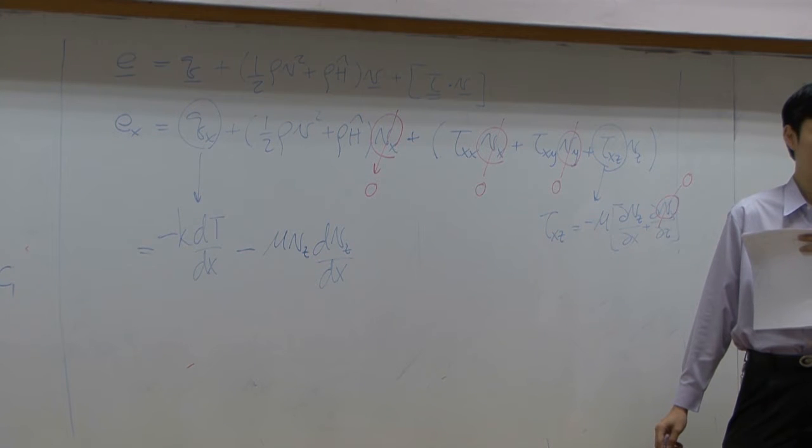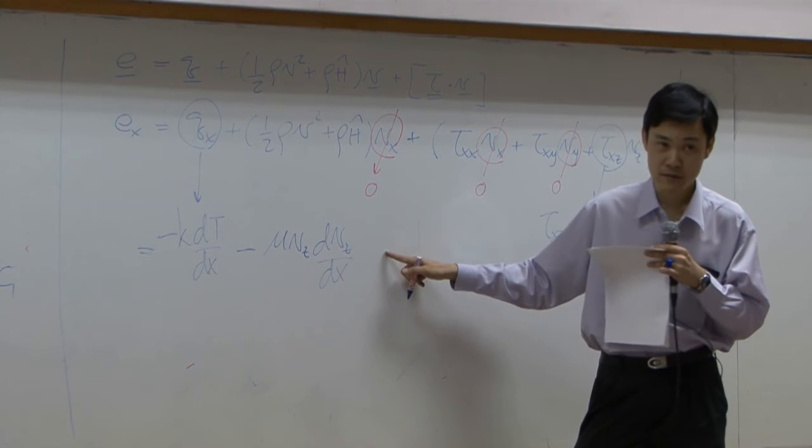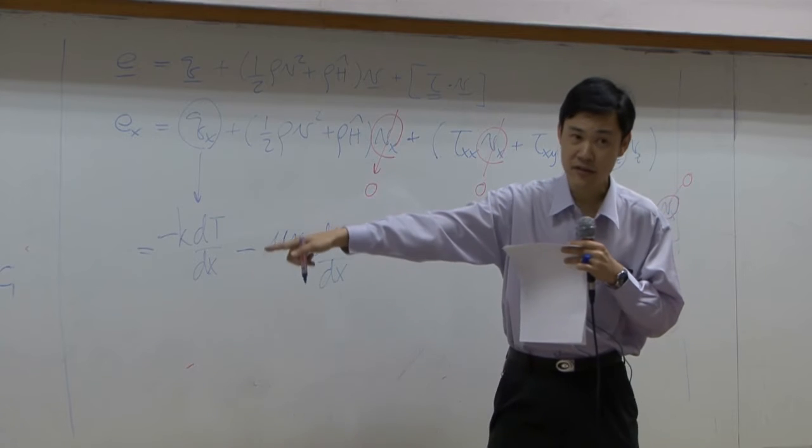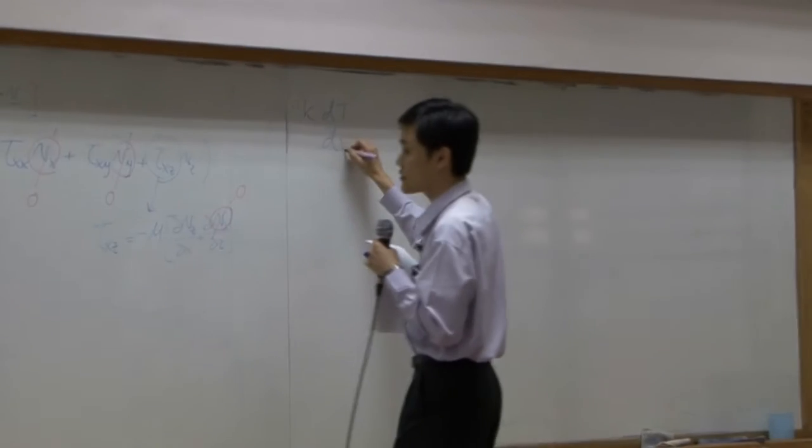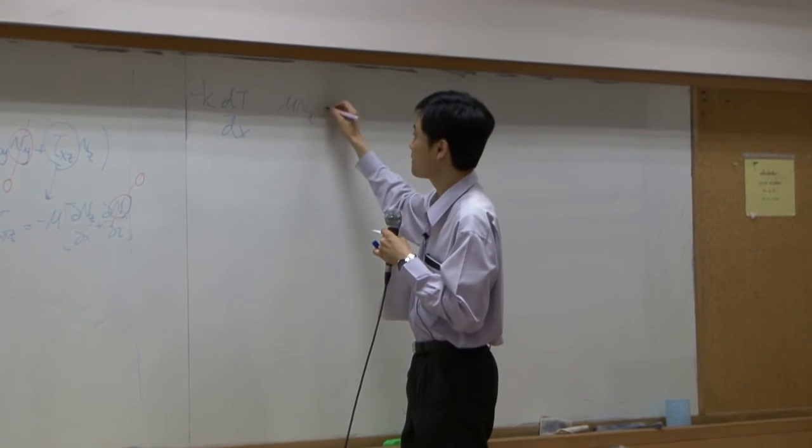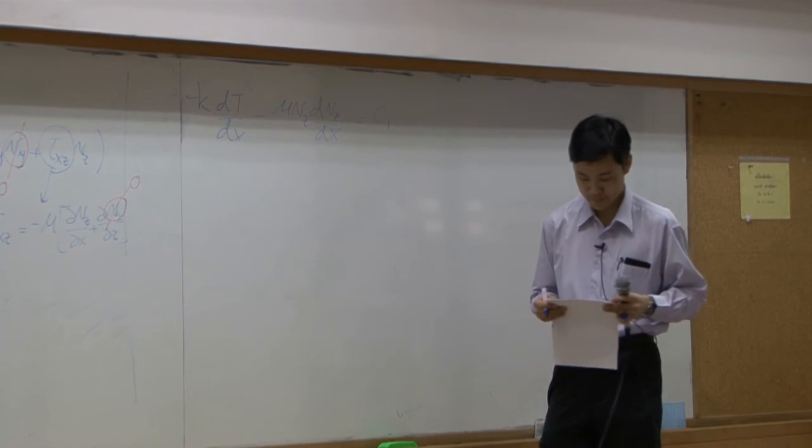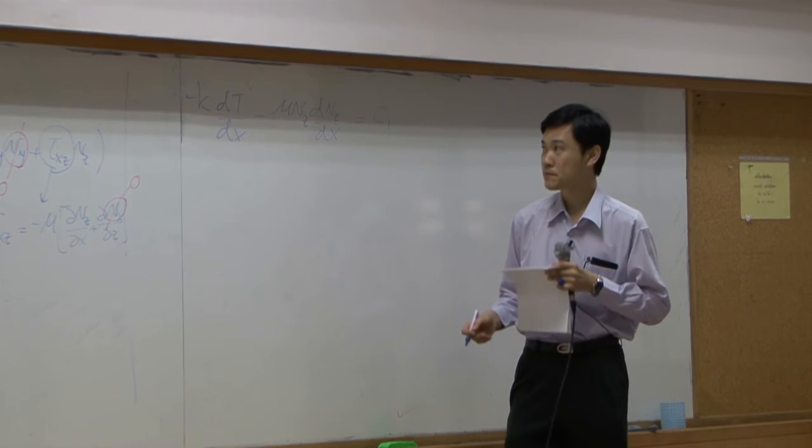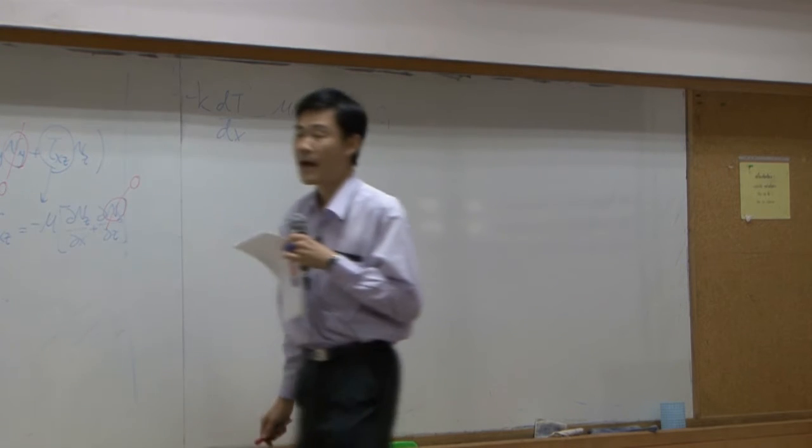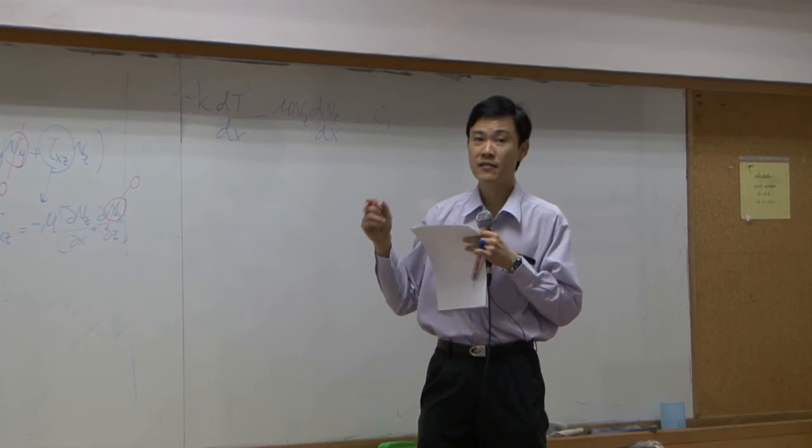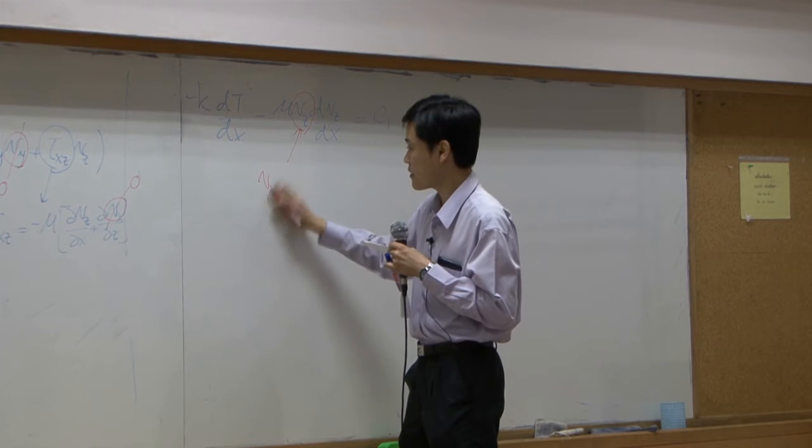Next step, we got expression for combined flux. Then we can just plug it back into our shell balance. You get minus k dt by dx minus mu Vz dVz by dx equal to c1. Then, I'm going to use the velocity profile that we derive from momentum transport equation. Convert this Vz to be Vb x over b.